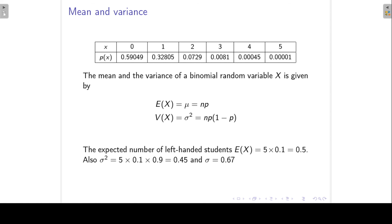So for our example, the expected value will be n=5 times 0.1 to give me 0.5. The variance will be 5 times 0.1 times 0.9, to give me a variance of 0.45. And of course, we can get the standard deviation from that by just taking the square root. So the standard deviation is 0.67.